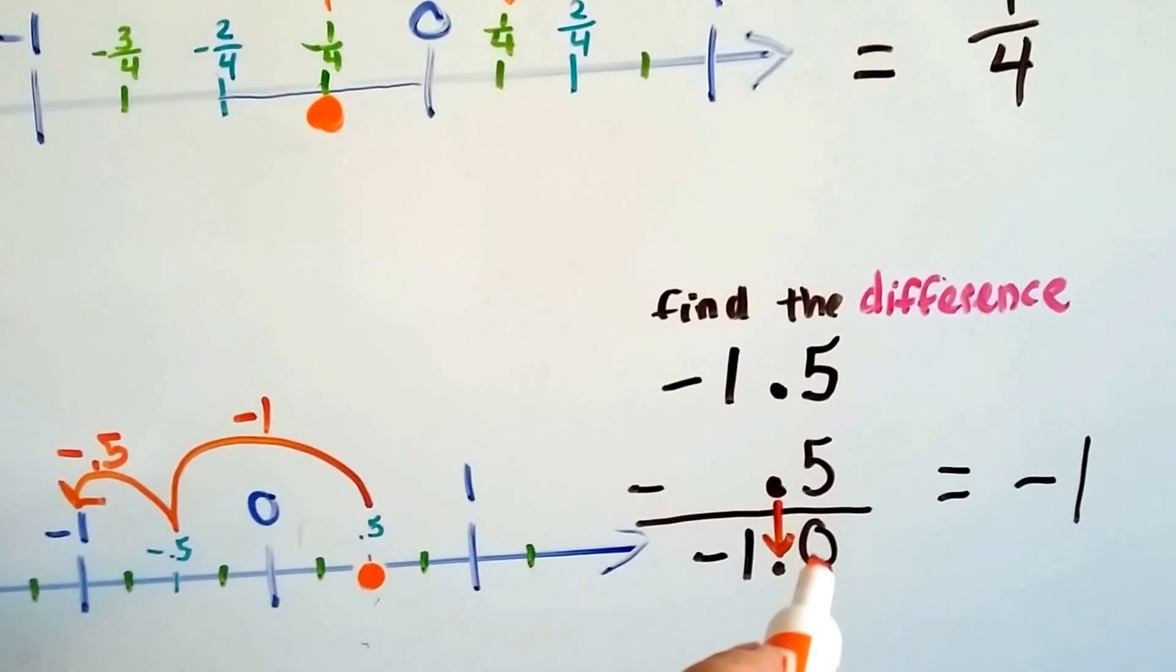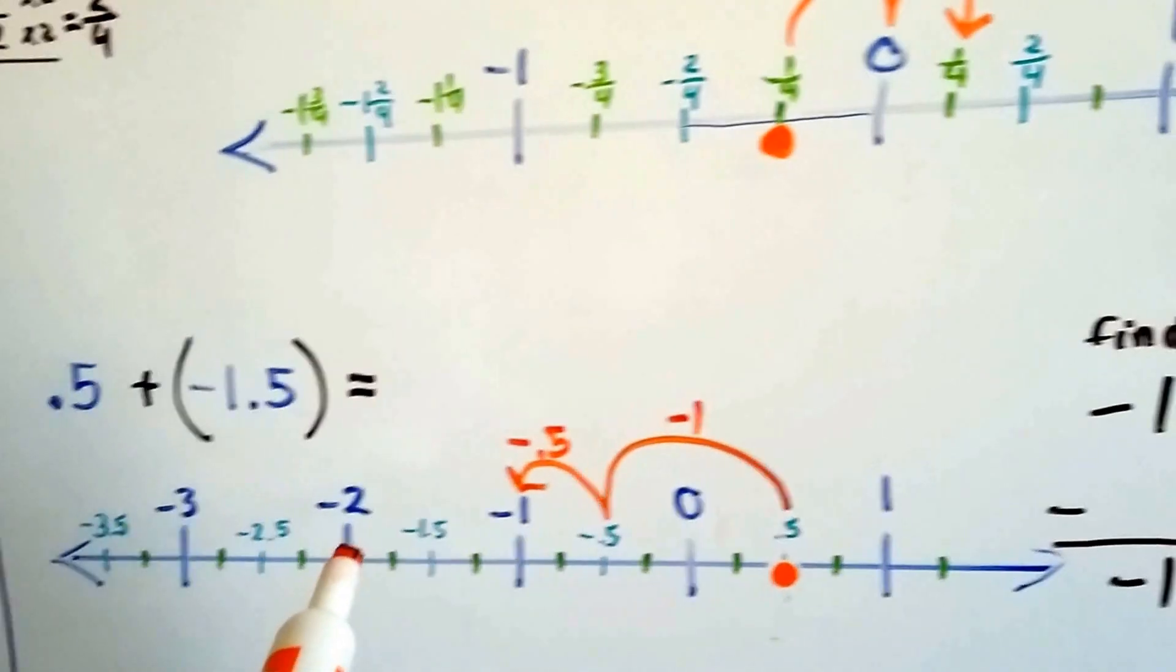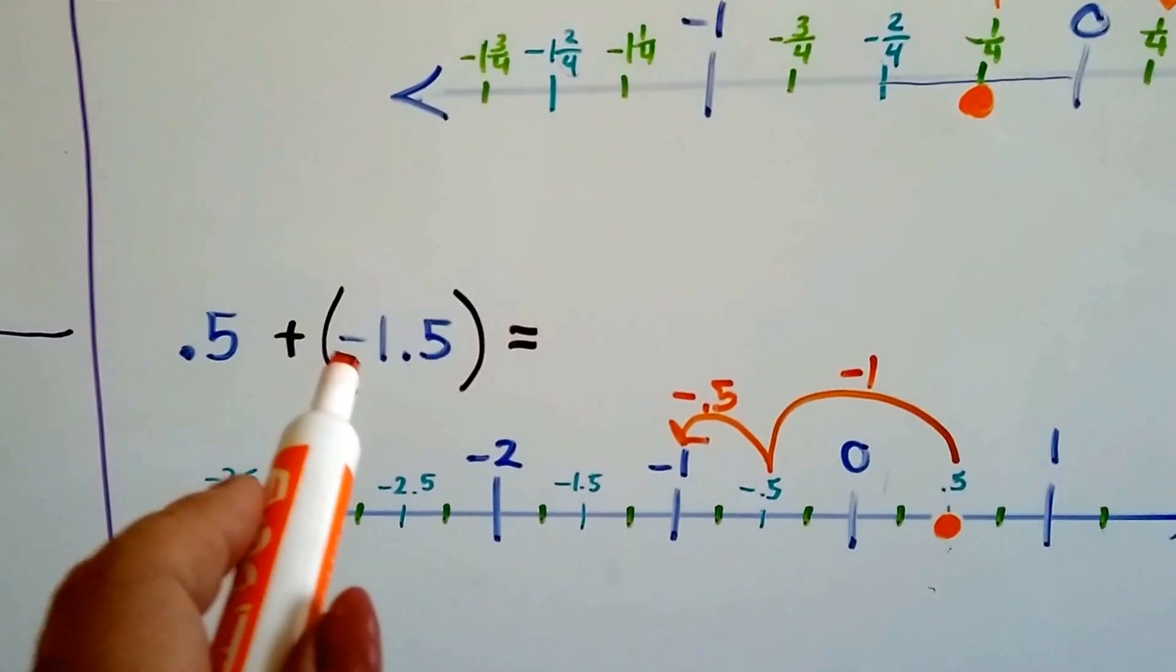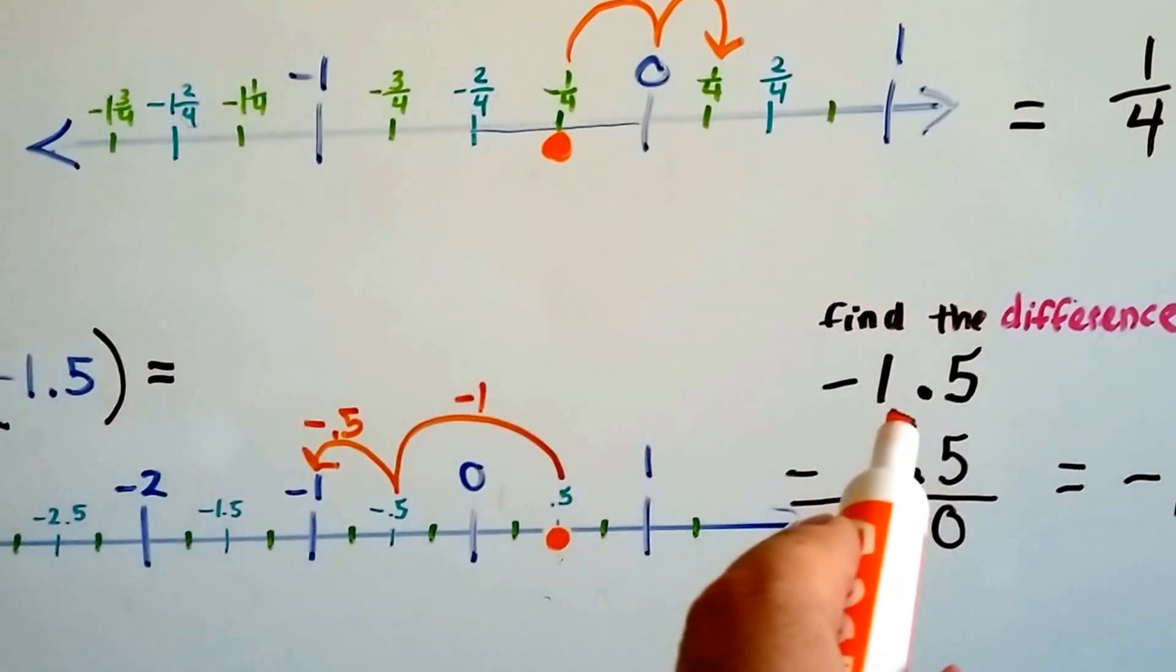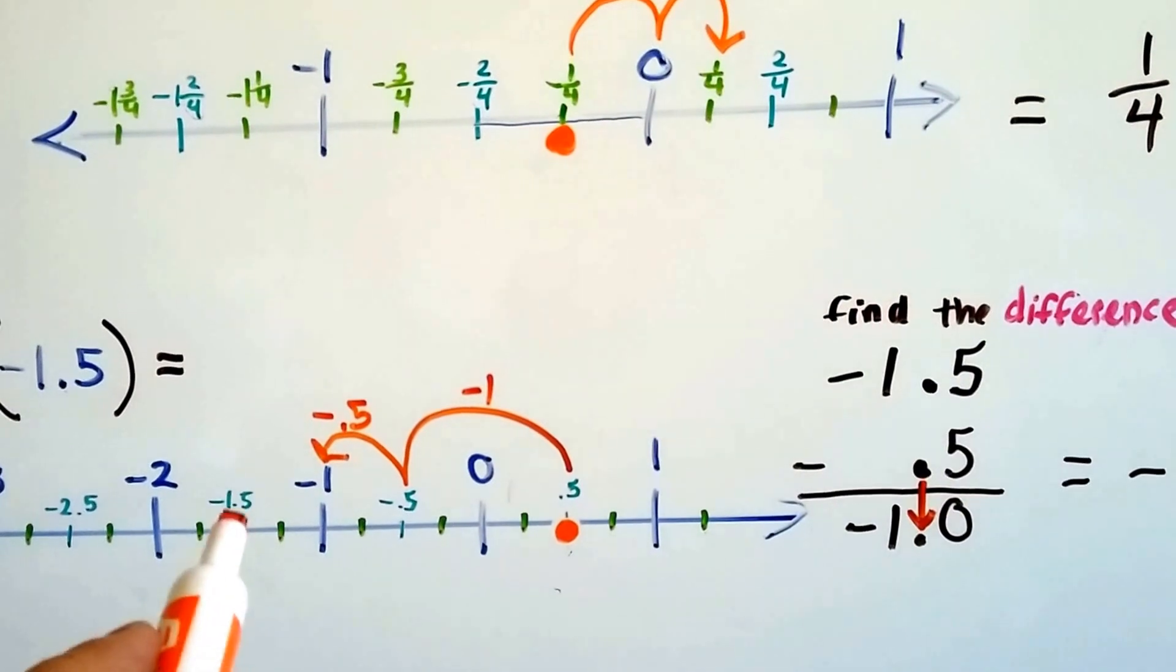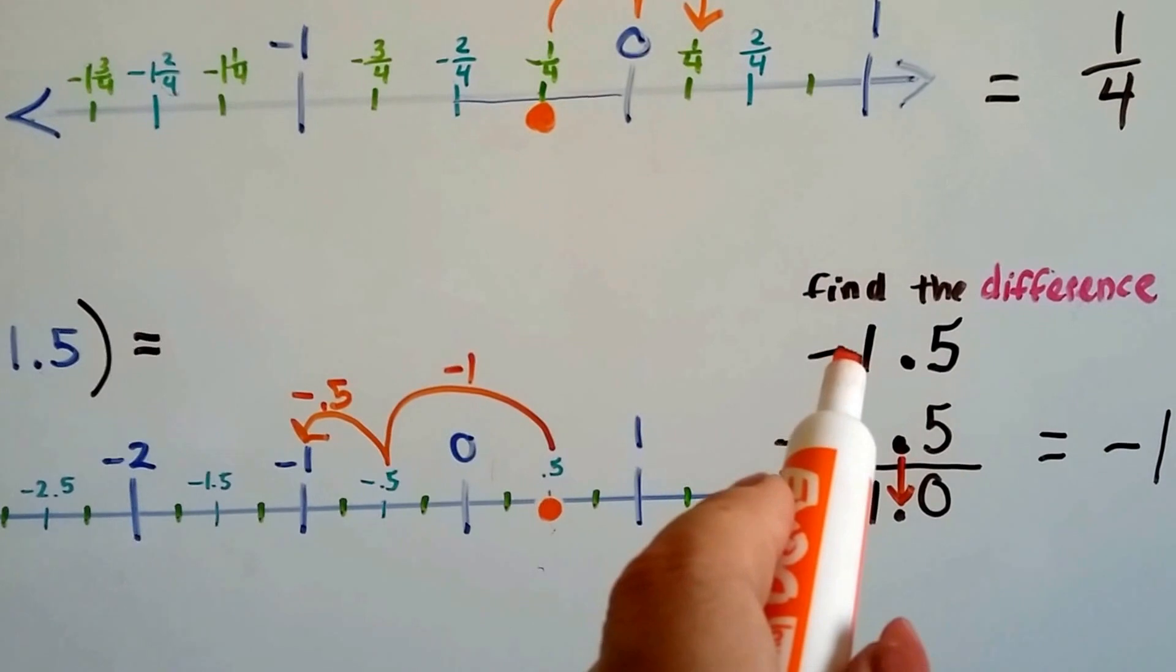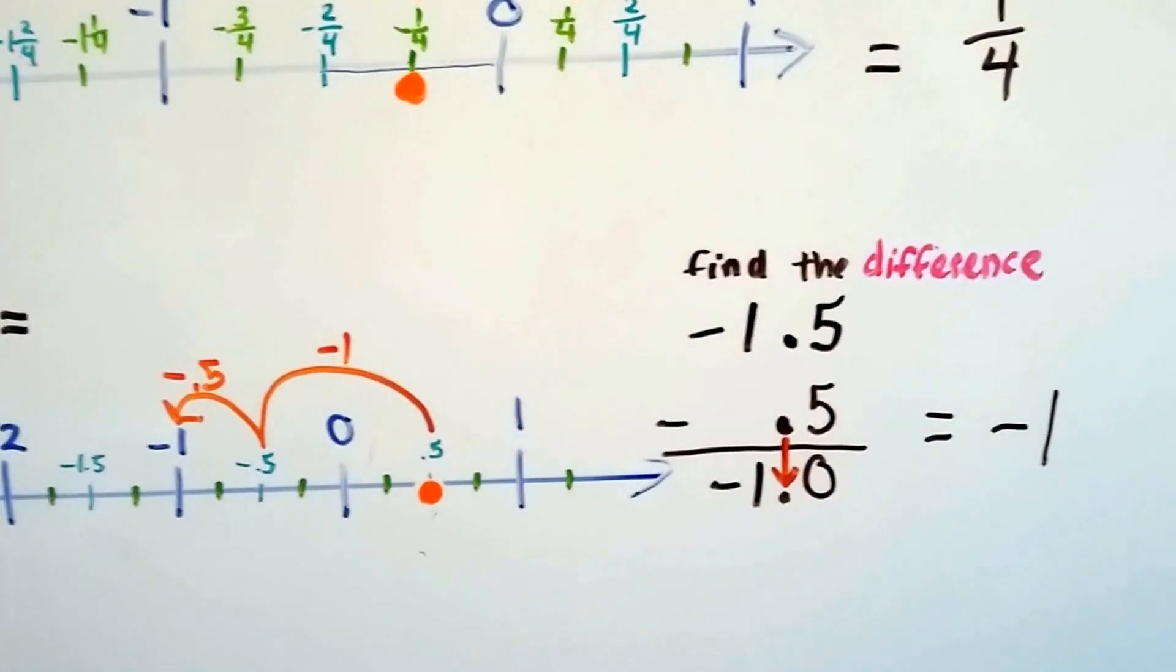5 take away 5 is 0. We drop down our decimal point, and the negative 1 drops down, because we take the value of the larger absolute value. We take the sign of the larger absolute value. And which is bigger and farther away from 0? A negative 1.5 or a 0.5? So, it's going to be the negative 1.5 is farther from 0, and it's a negative, so we end up with a negative 1. See?